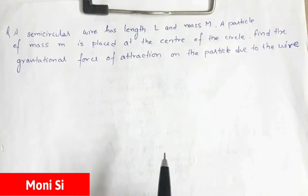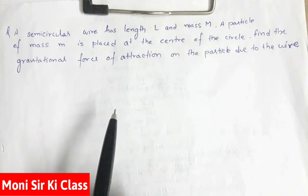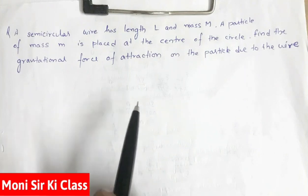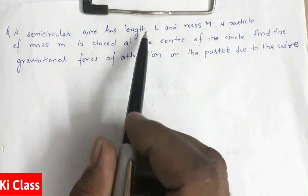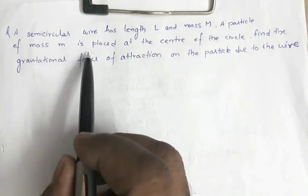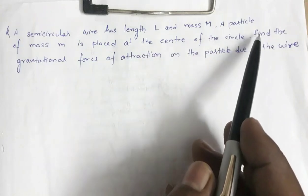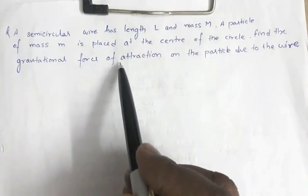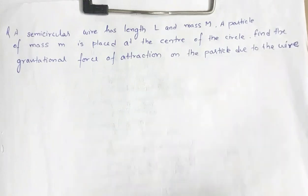Hello everyone, welcome to my channel. In this video we are going to solve a typical problem on gravitation. The question is: a semicircular wire has length L and mass M. A particle of mass M is placed at the center of the circle. Find the gravitational force of attraction on the particle due to the wire.